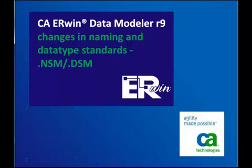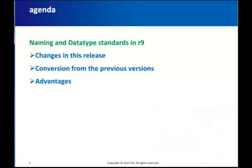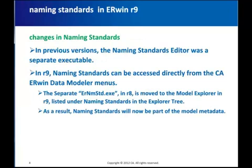Hello and welcome to another chapter in Urban video series. This one is about the changes regarding naming and data type standards implementation in CA Urban Data Modeler R9. With version 9 of CA Urban Data Modeler, there has been a change in how naming and data type standards are associated and used in a model. This presentation explains those changes and how they will impact conversion from older versions, and we will also discuss some of the advantages of this change.